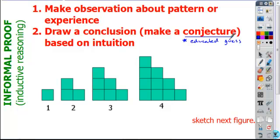If you looked at this pattern, here's figure one, figure two, three, and four. Would you be able to sketch the next figure in this pattern? What's the next figure going to look like? How would you describe it? Each of these staircases has how many stairs or boxes on the lower row?